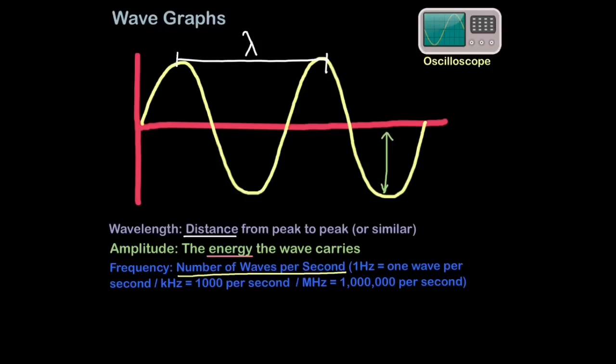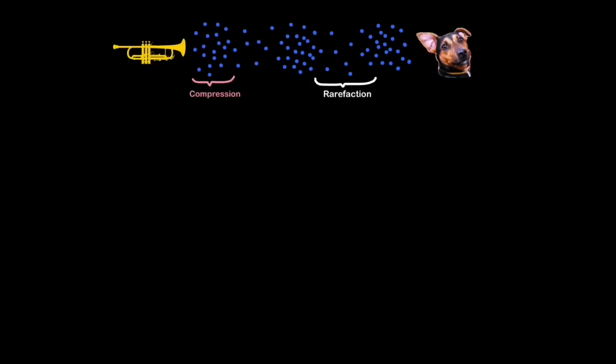It can also be measured in kilohertz, which would be thousand per second, and megahertz, which is one million waves per second. Sometimes in exams, they will show sound waves, and only sound waves, not light waves, like this, like a particle diagram.